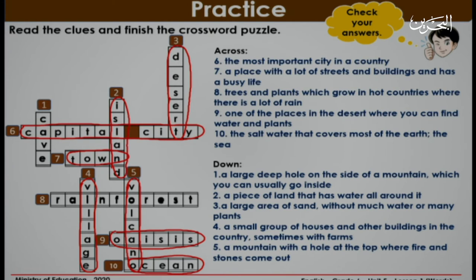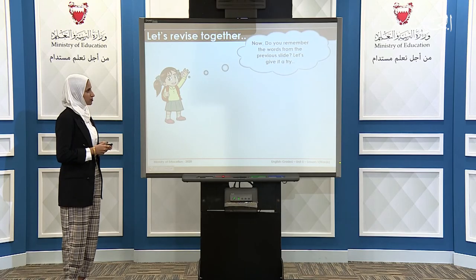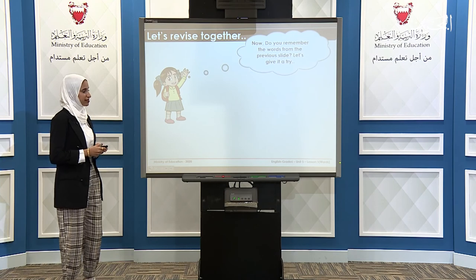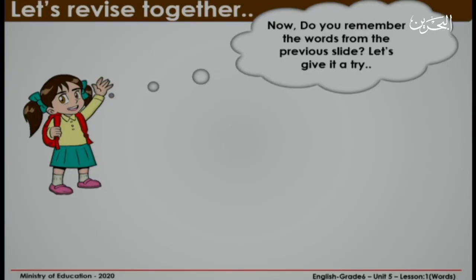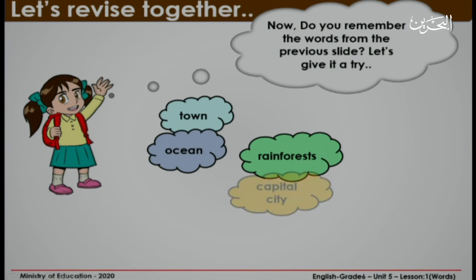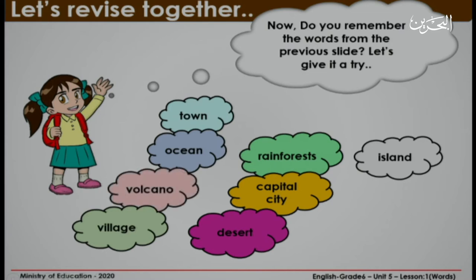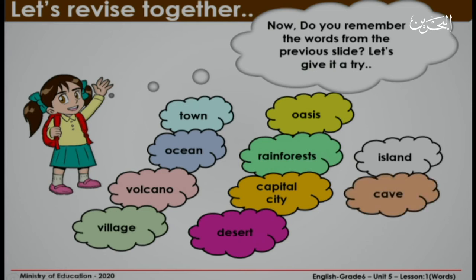You've done a great work. Now let's revise together. Do you remember the words from the previous slide? Let's give it a try. Town, rainforest, ocean, capital city, desert, island, village, volcano, oasis, and finally cave. Well done.